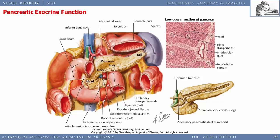The exocrine function of the pancreas produces amylase, lipase, and bicarbonate to neutralize stomach acid. The major pancreatic duct joins the common bile duct here. The common channel theory explains gallstone pancreatitis. Some papers dispute this mechanism, and there may be other pathophysiologic processes that can cause it, but they remain unclear.